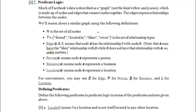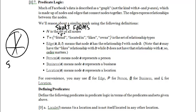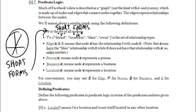I'm going to make short forms for the relationship types. We haven't used F yet, so I'll use F for 'friend'. For 'located in', since L is already taken, I'll use 'in'. 'Likes' and 'owns' are pretty short already, so I'll leave those as they are. Now, the task is to define the following predicates in predicate logic in terms of the predicates and sets given above.